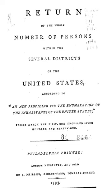Two or More Races: People may have chosen to provide two or more races either by checking two or more race response checkboxes, by providing multiple write-in responses, or by some combination of checkboxes and write-in responses.